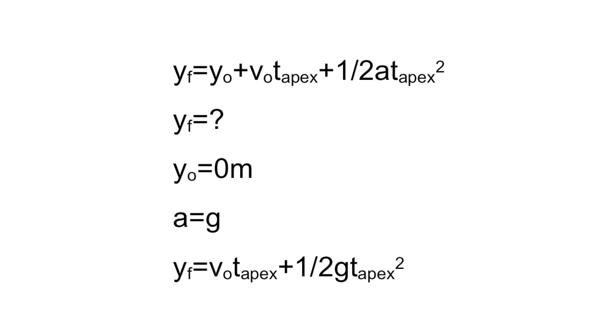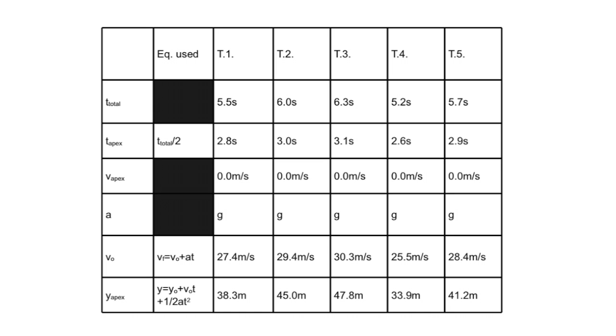Step 6: To find the maximum height of the object, we must use the third kinematics equation. A derivation of how to get the exact maximum height can be seen above. An example of a filled out data table can be seen above. Analysis questions.